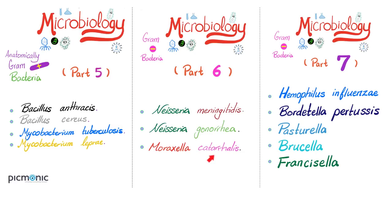What did Moraxella cause? Otitis, sinusitis, bronchitis, laryngitis, etc. Similarly, Haemophilus influenzae can also give you otitis, laryngitis, and even meningitis, as well as epiglottitis. Today we'll talk about Bordetella pertussis, Pasteurella, Brucella, and Francisella — droplets, droplets, cats and dogs, goat cheese, rabbit skinning.